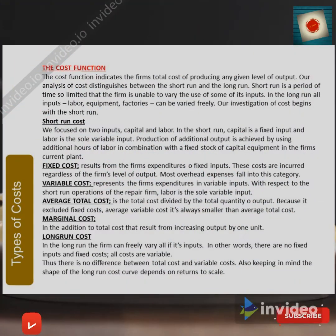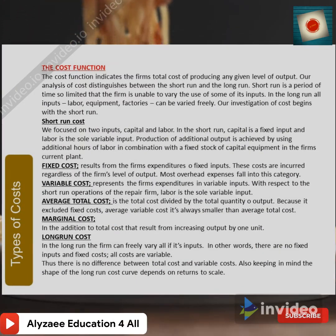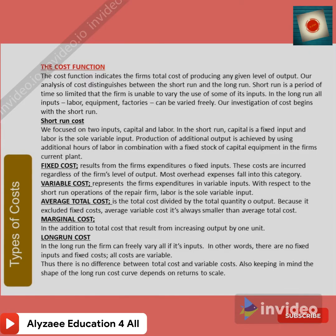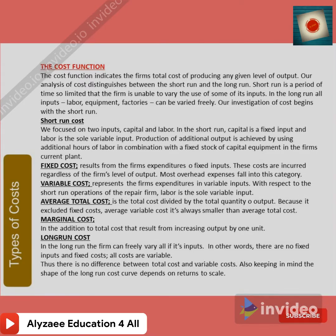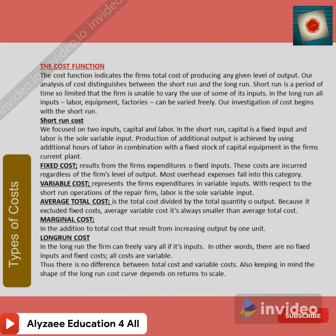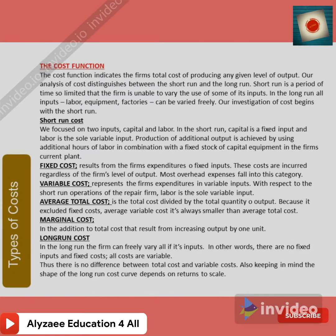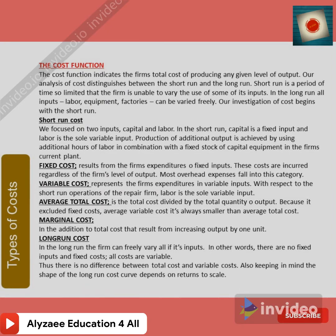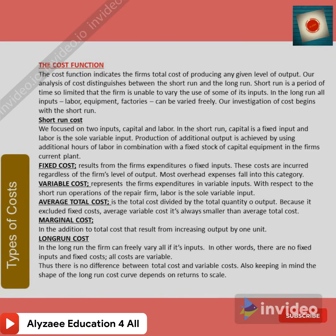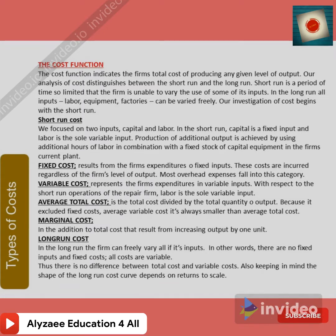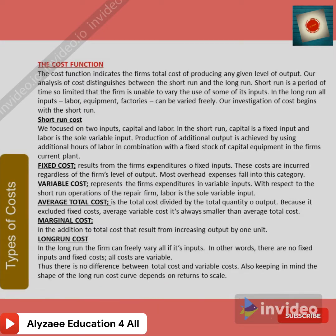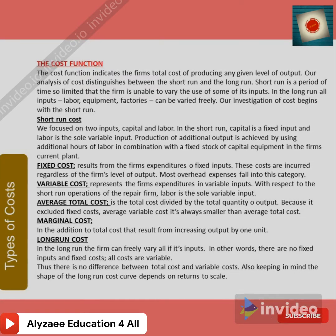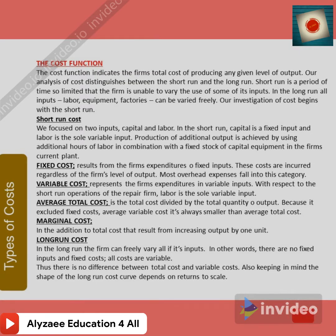The cost function indicates the firm's total cost of producing a given level of output. Our analysis distinguishes between the short run and the long run. The short run is a period of time so limited that the firm is unable to vary some of its inputs. In the long run, all inputs — labour, equipment, and plant — can be varied freely. Our investigation of cost begins with the short run.